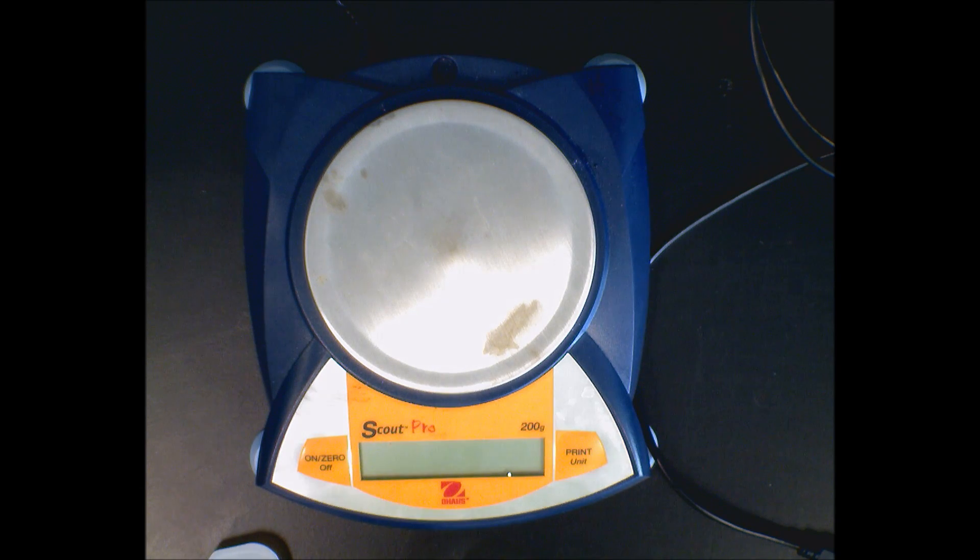So here today we're going to show how to use one of our electronic balances. You notice that we have a dark screen here. It says 'on', so we're going to push that. You must wait - this does have electronics in it. It's running through a little warm-up, a system setup, just like your computer would. When it says zero zero zero, you're ready to go.